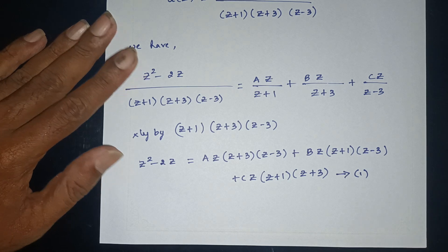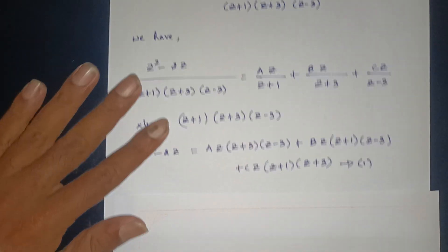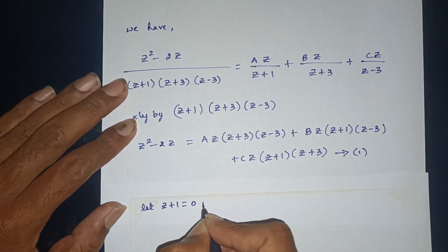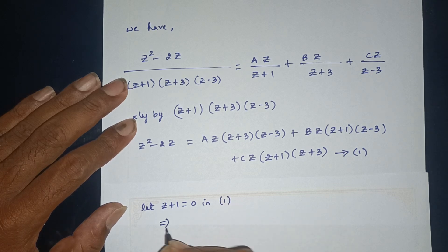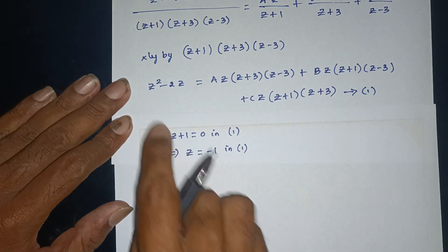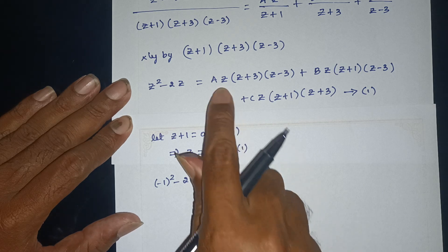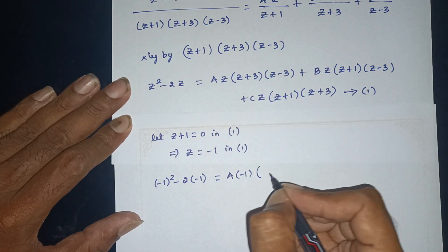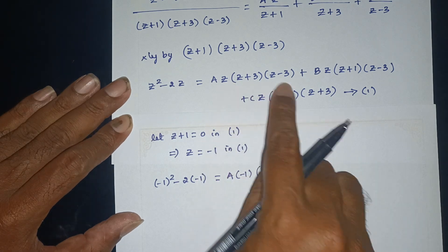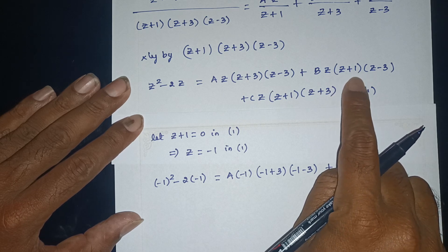Equation: z² minus 2z = A(z+3)(z minus 3) + B(z+1)(z minus 3) + C(z+1)(z+3). Let z+1 = 0, so z = minus 1. Substituting z = minus 1: (minus 1)² minus 2(minus 1) equals A times (minus 1 plus 3)(minus 1 minus 3).